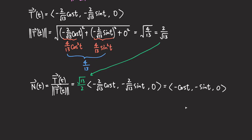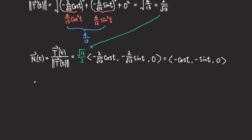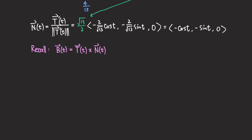The last vector we need to find is the unit binormal vector B. B is quite easy — B(t) is equal to T cross N, taking the cross product of the unit tangent and the principal unit normal. We write this as a 3×3 determinant with i, j, k in the first row.